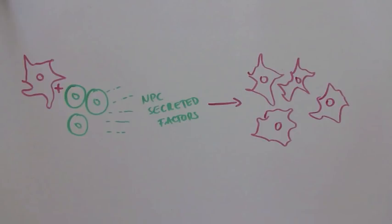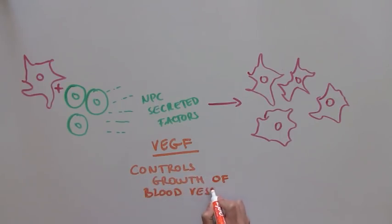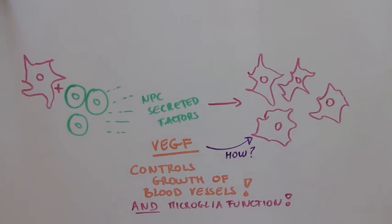The scientists of this paper also discovered that one of the important NPC-secreted molecules that is responsible for this is called VEGF, which controls the growth of blood vessels. It's not clear exactly how a factor that controls the growth of blood vessels could be responsible for controlling microglia function, but it's definitely a new avenue of research.